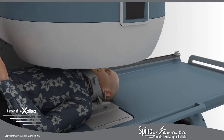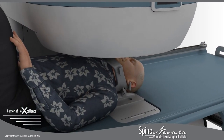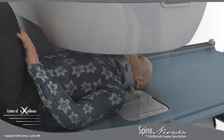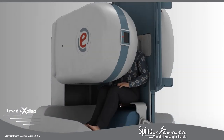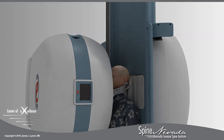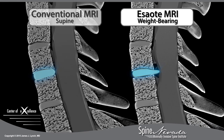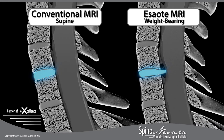The unique Esaote tiltable MRI obtains images in both the traditional horizontal position and tilts to an upright position during the same examination. The stress test MRI explains why patients hurt standing up but feel relief laying down, and why conventional MRI exams may fail to reveal the problem.